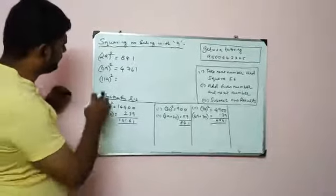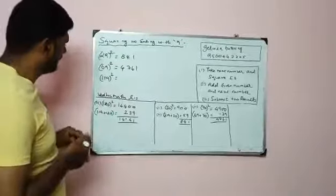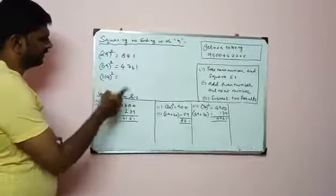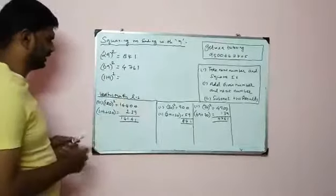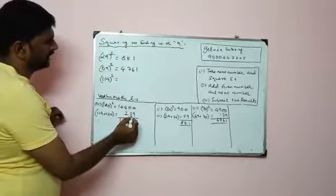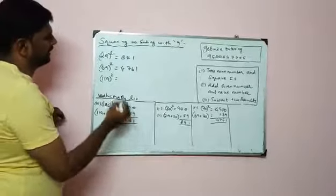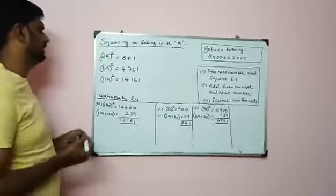Next one, 119 the whole square. Same procedure. 119's next number is 120, and the square is 14,400. Add the given number and next number, that's 239. The result subtracted is 14,161, the final answer.